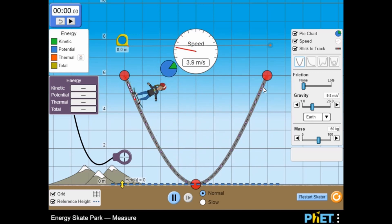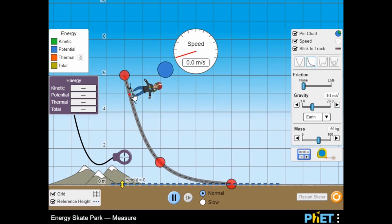In this simulation, you will measure the energy at different points along the skater's path, experiment with different tracks, and adjust the shape of the track.